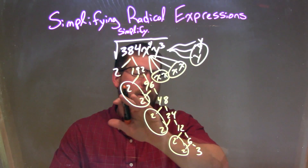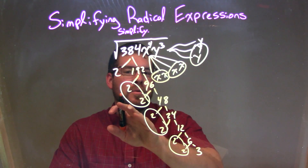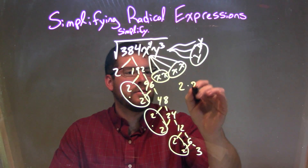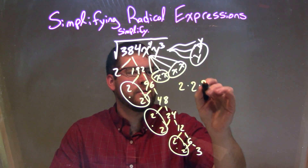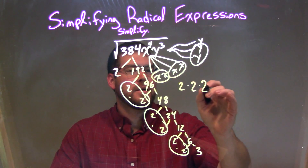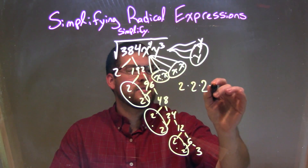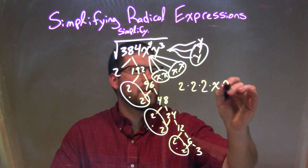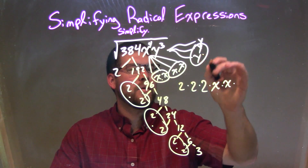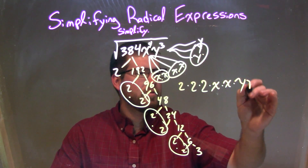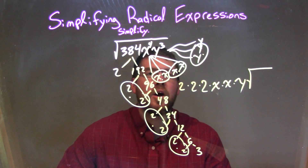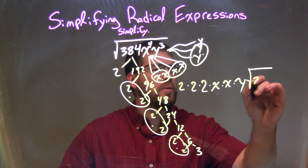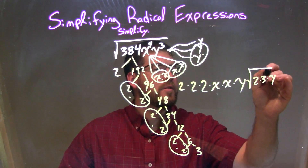For every pair, we put one number representing that on the outside of the square root. So we have one pair of 2, times this pair of 2's, times this pair of 2's, times one pair of x's, times another pair of x's, times one y. The square root — what's left on the inside — is all the singles, which are the 2, the 3, and the one y. So we have 2 times 3 times y inside the square root.